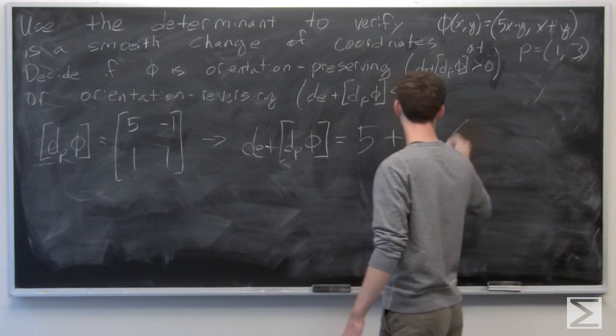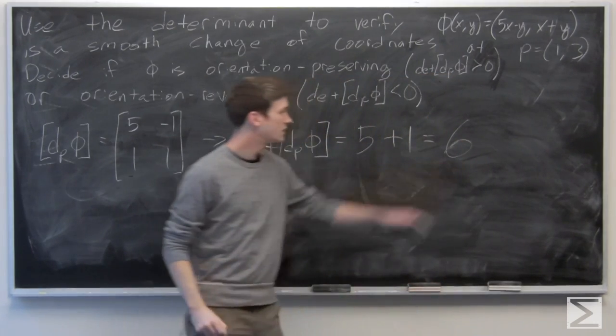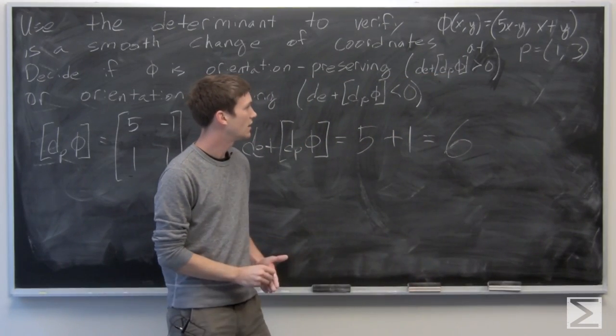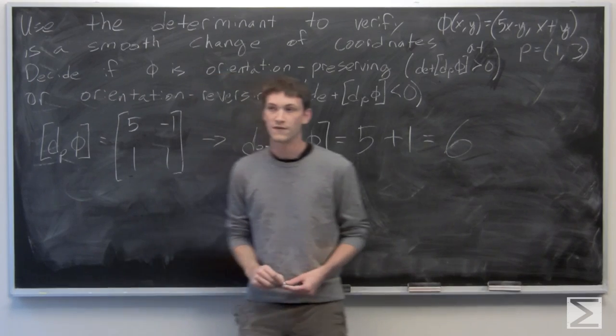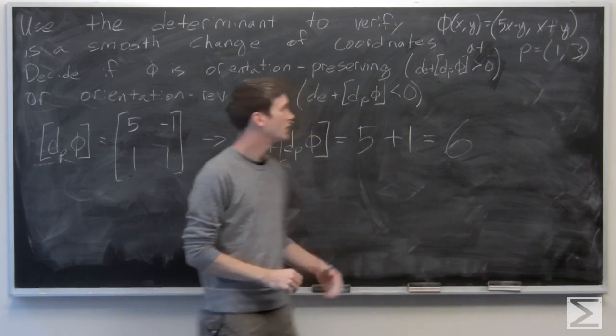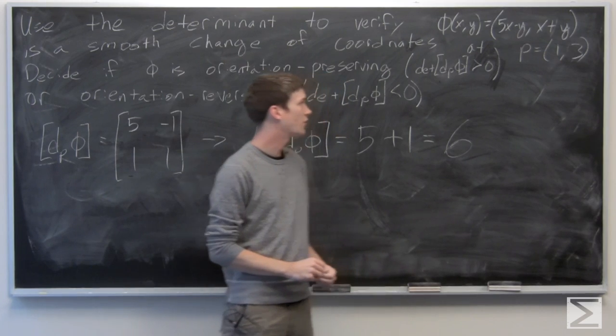which is equal to 6. So since our determinant is non-zero, we know that phi is a smooth change of coordinates locally at p equals (1,3).